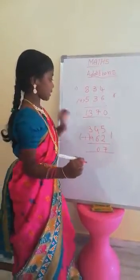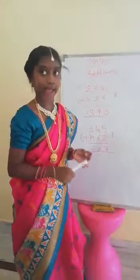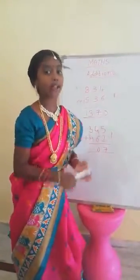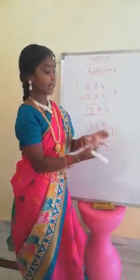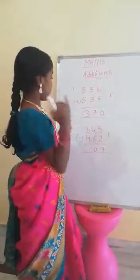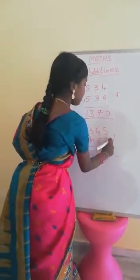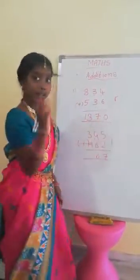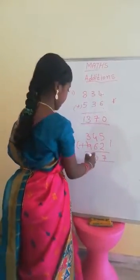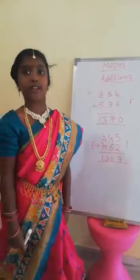After, 3 plus 9: count — 3, 4, 5, 6, 7, 8, 9, 10, 11, 12. 12 add 1 carry means 13. 13 is the answer. Final answer is 1307.